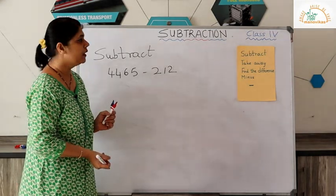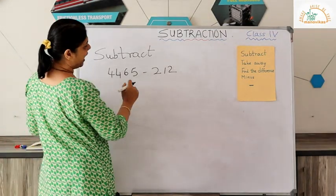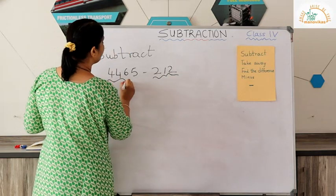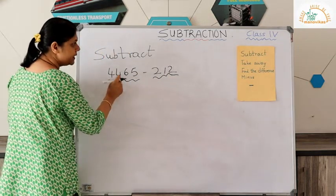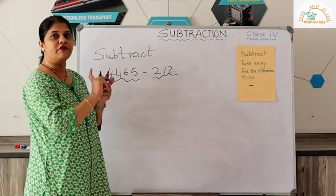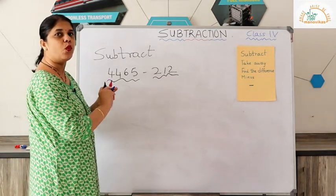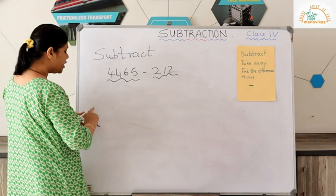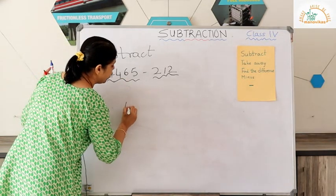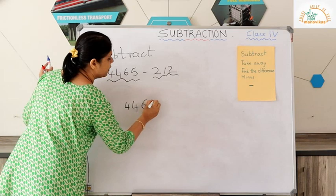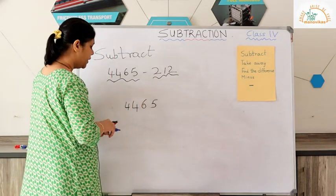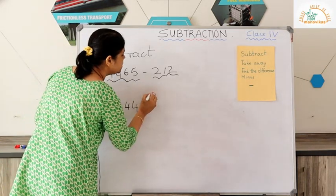Now let us see the next example. Here we have to subtract 212 from 4465, which is the greater number. We will write the numbers one below the other — 4465 on top. Let us write the place values.